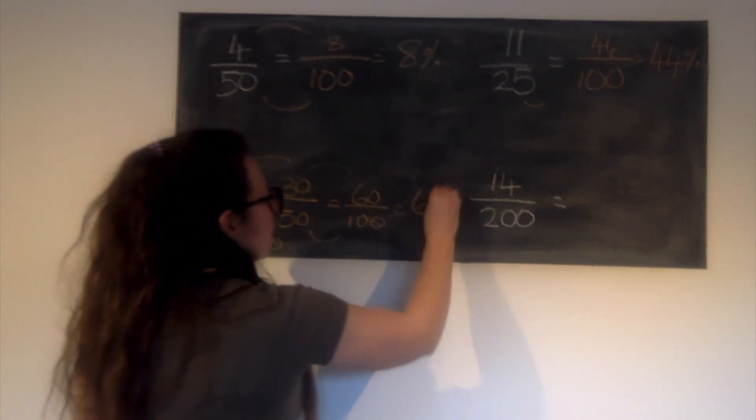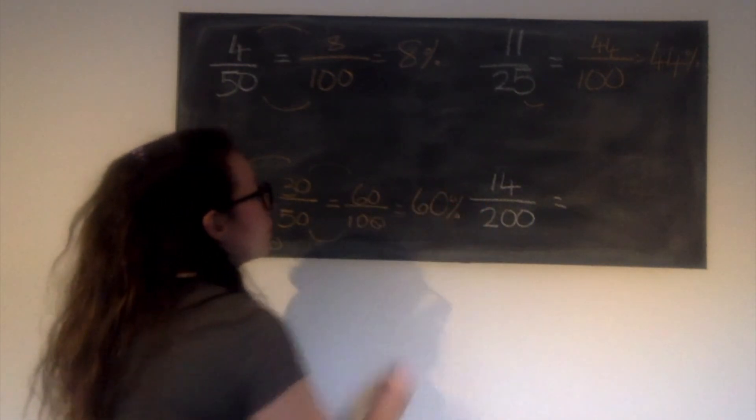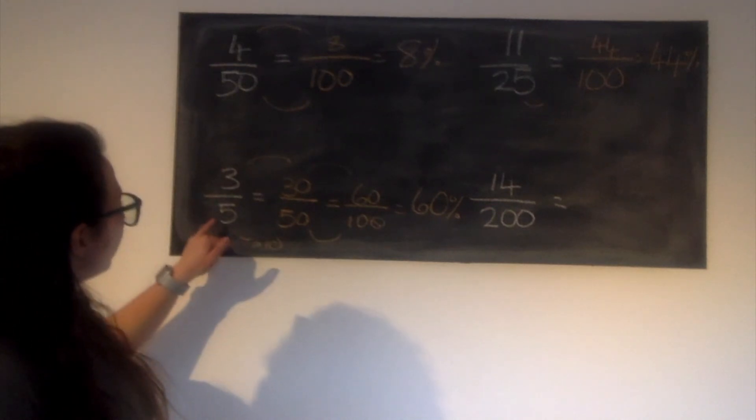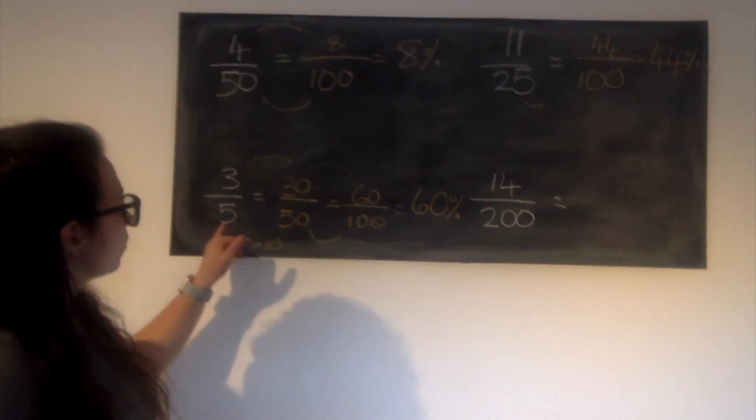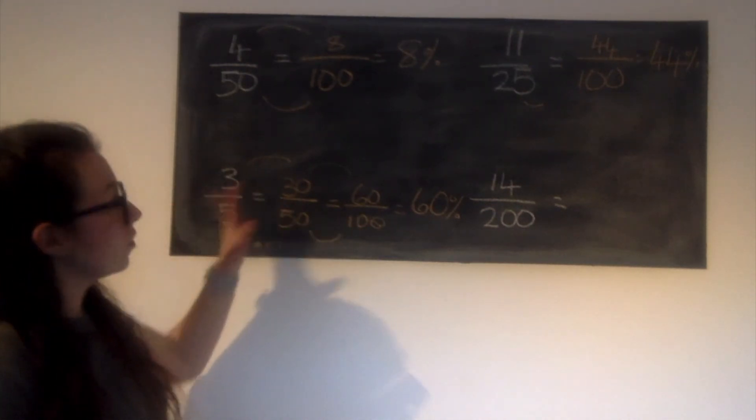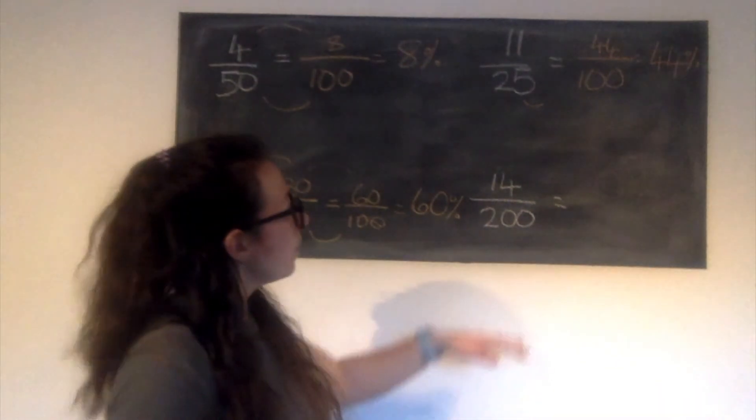60 hundredths is 60%. You might have been able to go straight from fifths to hundredths. You would have had to times by 20. So if you did that, that's fine. And the last one.